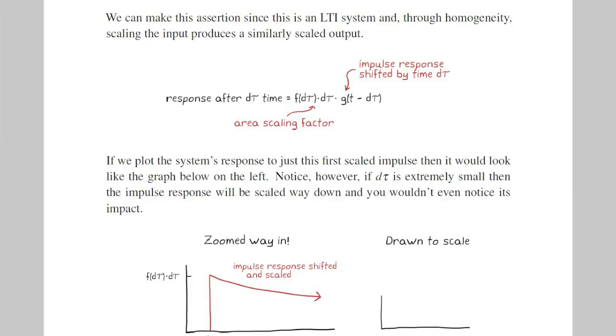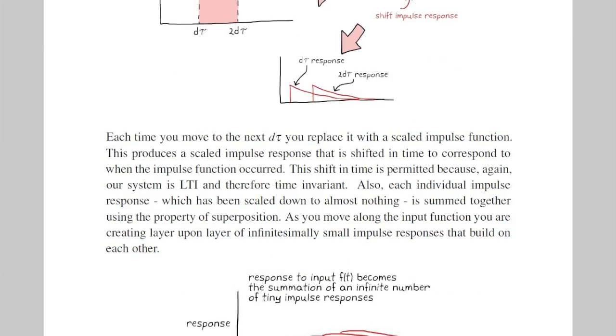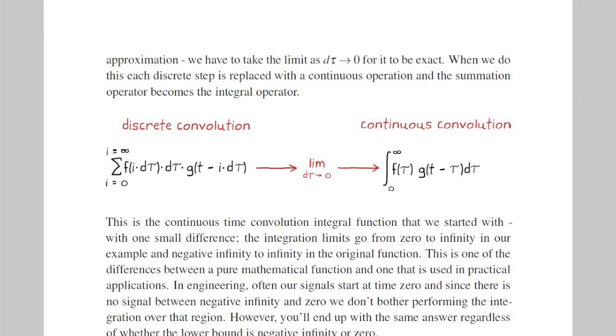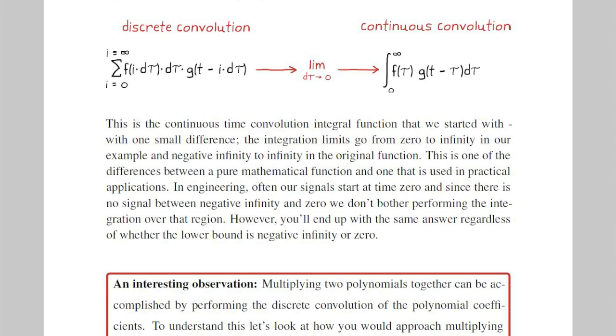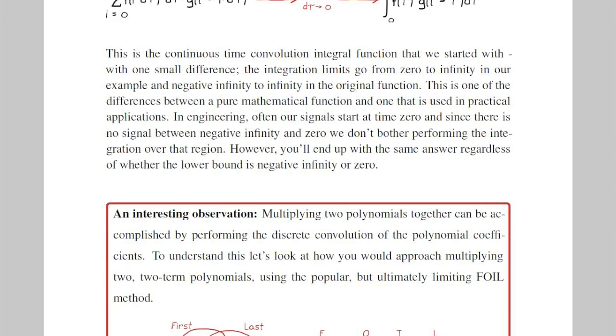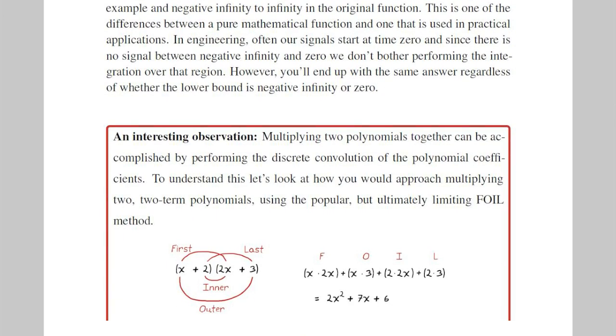I had previously mentioned briefly the concept of discrete convolution. That is, performing convolution on a discrete signal rather than a continuous signal. Well, an observation that you might find interesting is that when you multiply two polynomials together, you're actually performing a discrete convolution of the polynomial coefficients.